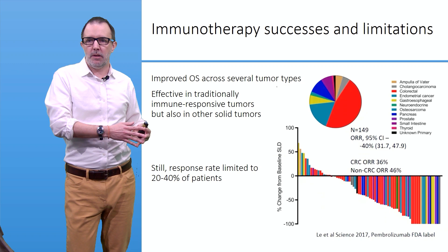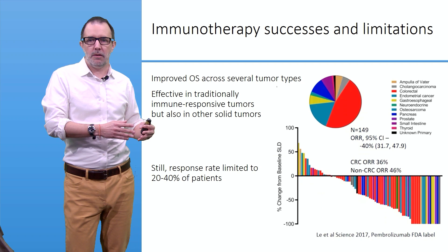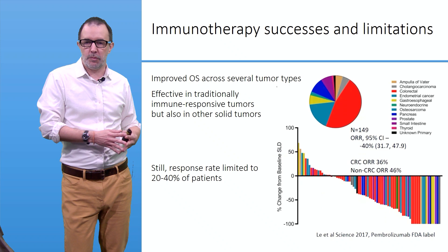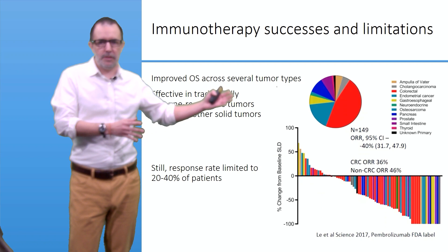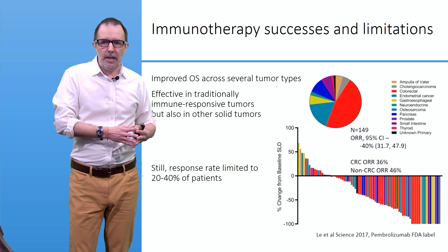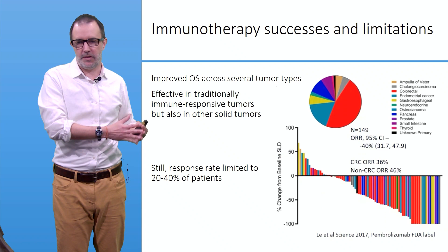Immunotherapy has been demonstrated to improve overall survival rates across several tumor types. It is effective in traditionally immune-responsive tumors, but also in other solid tumors. As an example, a clinical study with pembrolizumab — an anti-PD-1/anti-PD-L1 checkpoint inhibitor — shows that the response rate is typically limited to 20–40% of patients.